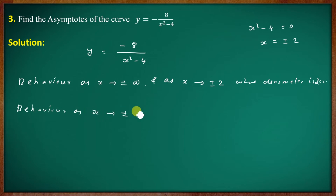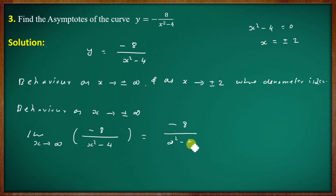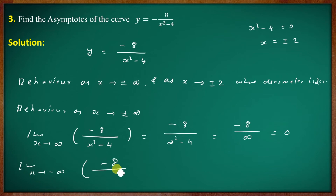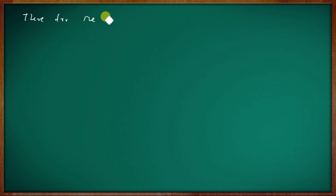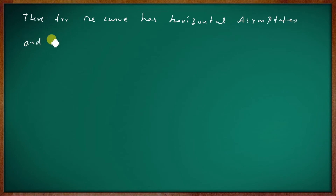For the next problem with denominator x squared minus 4 equal to 0, giving x equal to plus or minus 2. Horizontal asymptote behavior: as x tends to plus or minus infinity, the limit of minus 8 by x squared minus 4 equals minus 8 by infinity equals 0. Therefore, the curve has a horizontal asymptote and it is the line y equal to 0.